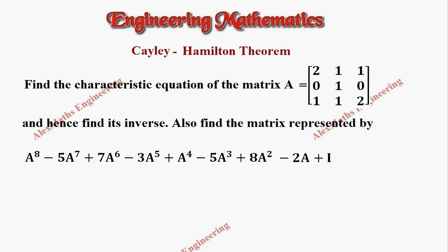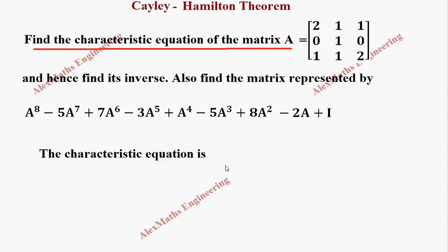Hi students, this is Alex here. In this video, we are going to find the characteristic equation of the given matrix A as a first part. The characteristic equation is: determinant of A minus lambda I equal to 0.